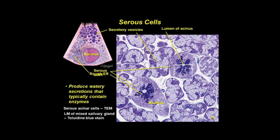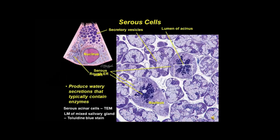Serous cells produce watery secretions that typically contain enzymes. Cells occur in secretory acinar units of pure serous glands, such as the parotid, lacrimal gland, and exocrine pancreas, and in mixed seromucus glands. Tightly packed cells with dark-stained cytoplasm surround a small lumen in the acinus. Seen here by TEM, serous cells are polarized and have basal, apical, and lateral domains, and a basal nucleus. Dense secretory vesicles and prominent rough ER are in their cytoplasm.